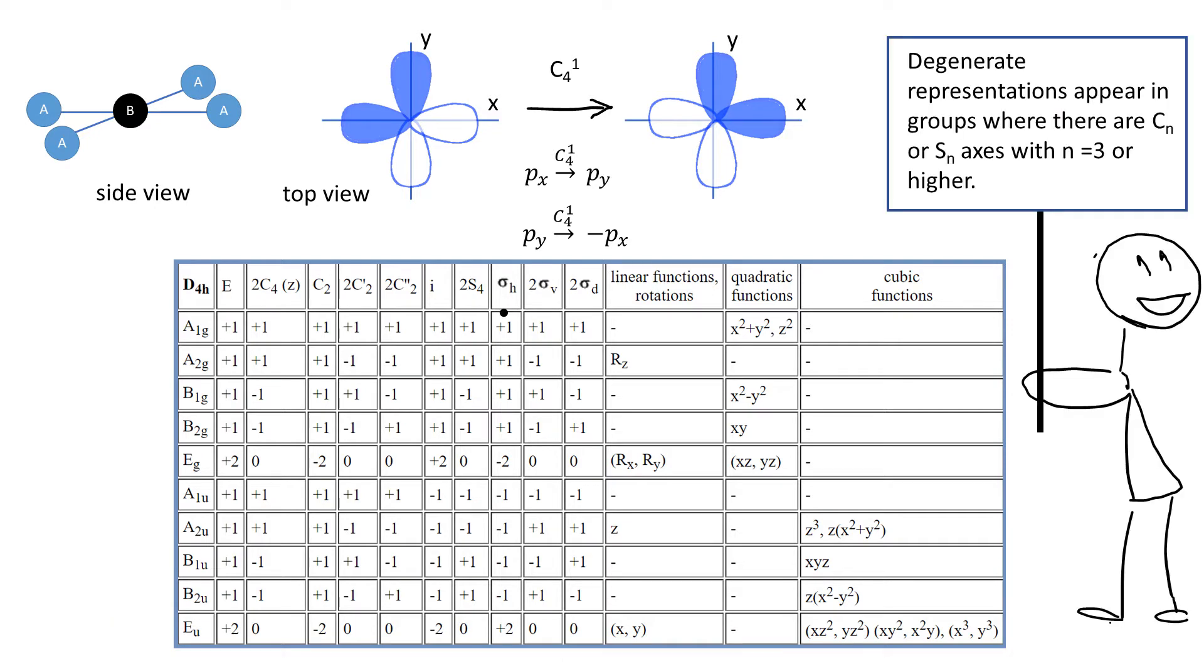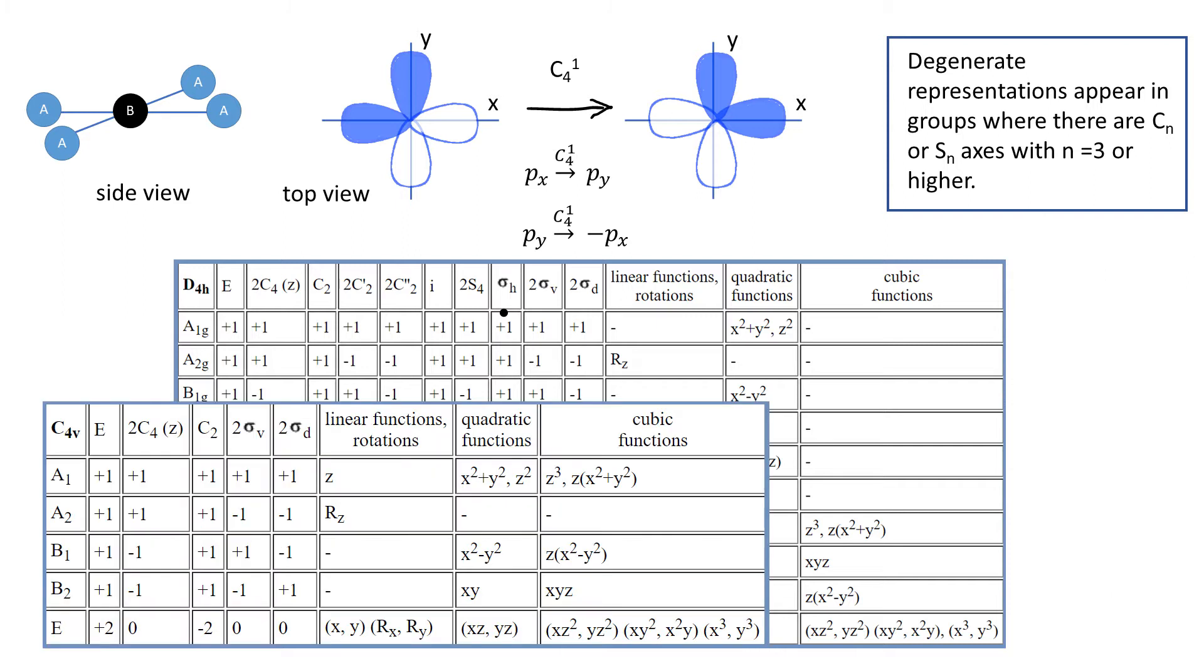The degenerate representations appear in groups where there are Cn or Sn with n equals 3 or higher. So let's look at C4V group. Let's see if we can recreate the E representation by creating the appropriate matrices.